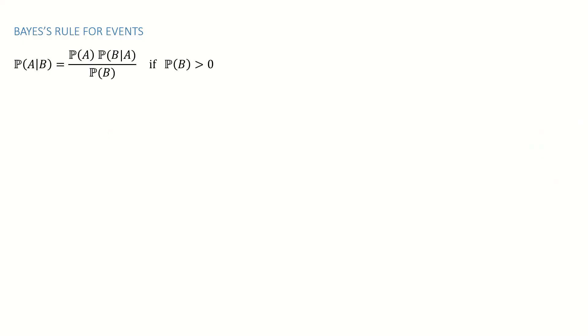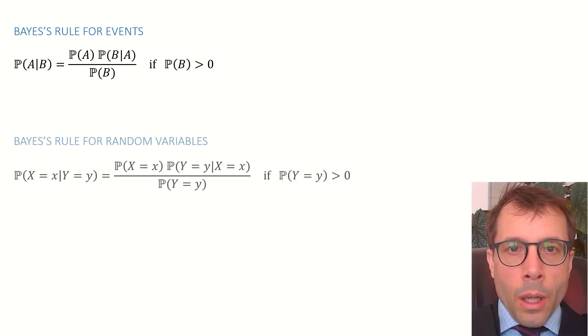Here's another example, a bit more challenging, Bayes' rule. You should all know Bayes' rule from the first course in probability. It says that if we have two events A and B, then the conditional probability of A given B is given by this formula here.